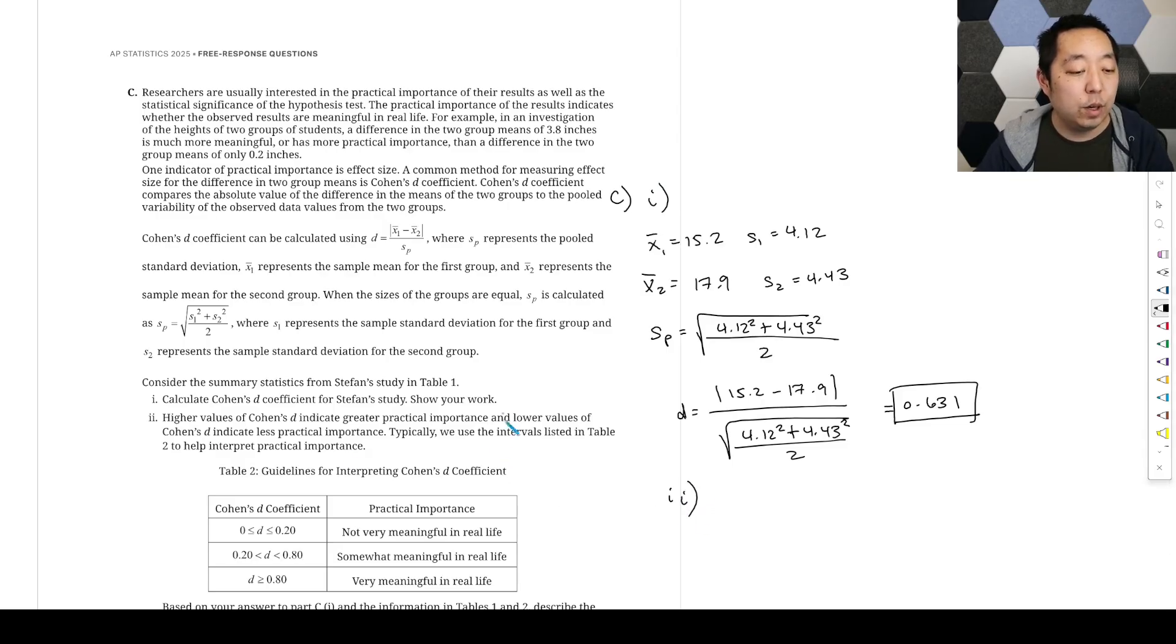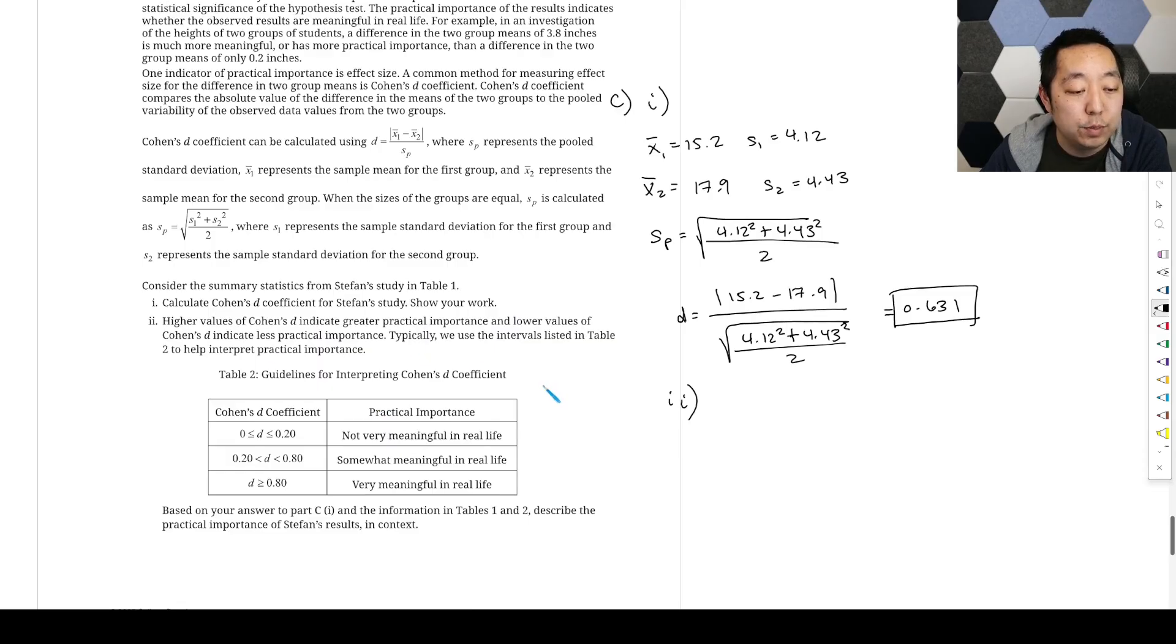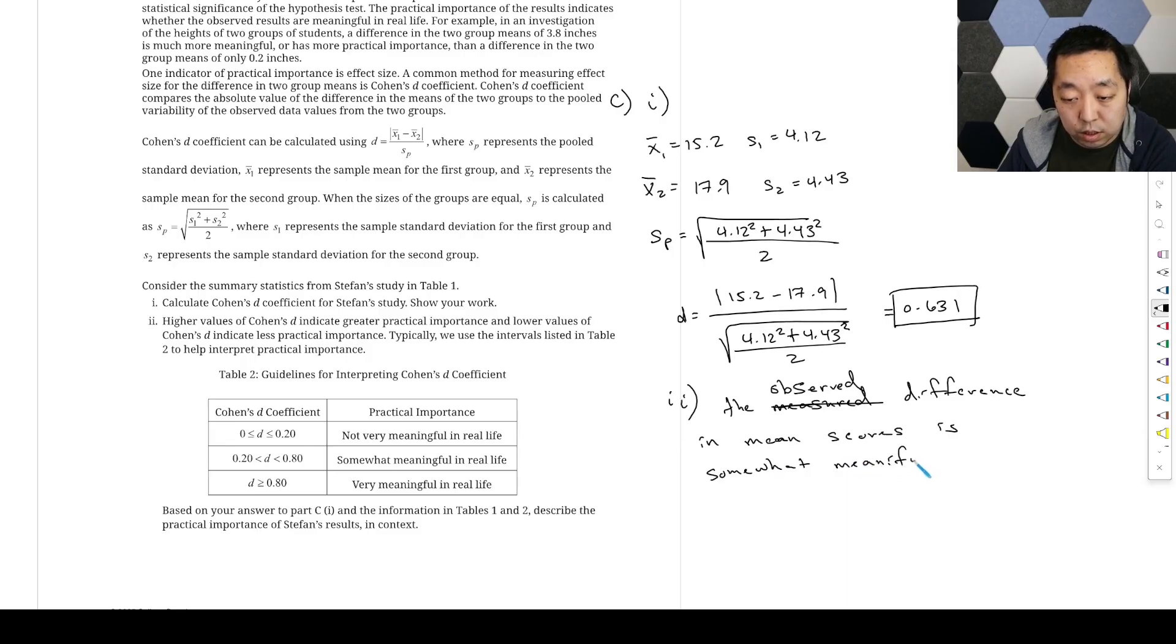And then for number two, higher values of Cohen's D indicate greater practical importance and lower values, less practical importance. Typically we use these intervals for practical importance. Based on your result, describe the practical importance. Well, we got 0.631. As long as you're just consistent here, we're in between here. So the measured difference or observed difference in mean scores is somewhat meaningful in real life.